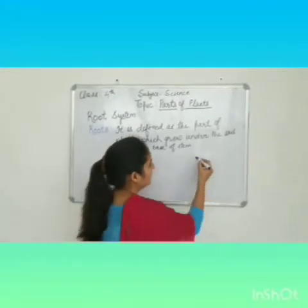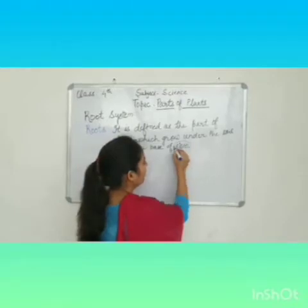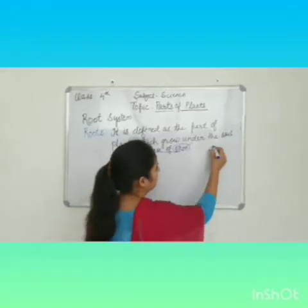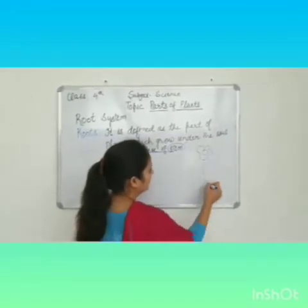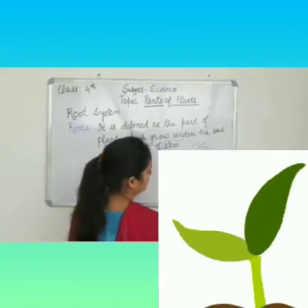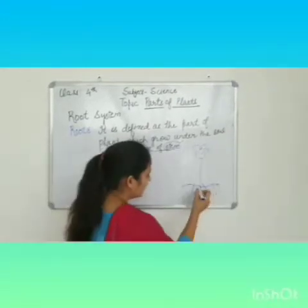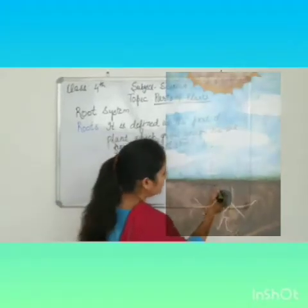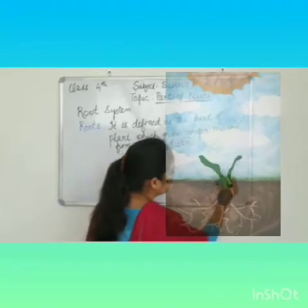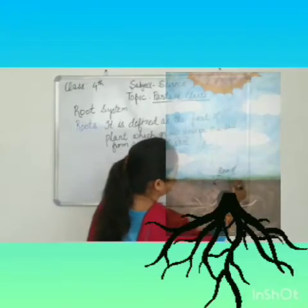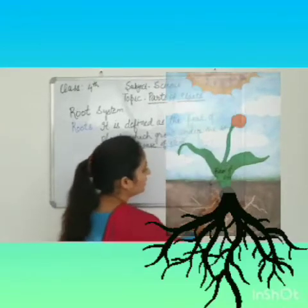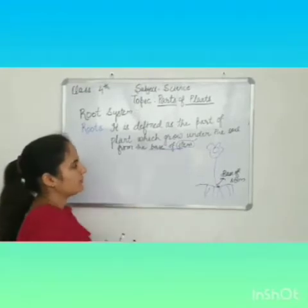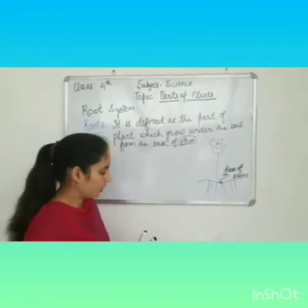So here you get to know about a new word, that is stem. From the base of stem — this is again your flower, these are roots. So this is the base of stem. The roots are the part of plant which grow under the soil from the base of stem. Now we have two types of roots.